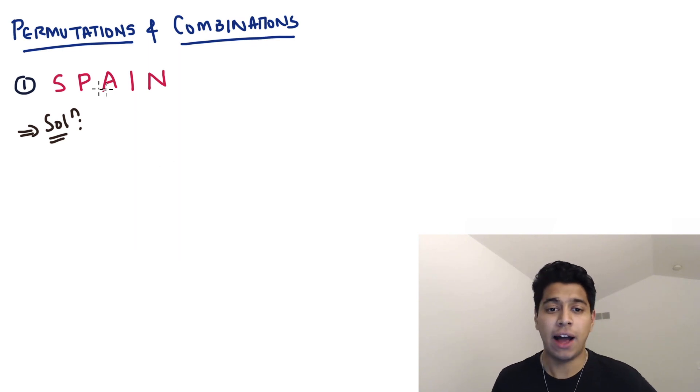Your first word is Spain. Now I'm just going to solve it how I solve it in an exam. So you have one S, one P, one A, one I, and one N. Five unique letters. So the number of ways you can arrange them is simply five factorial, which is 120. That's it.